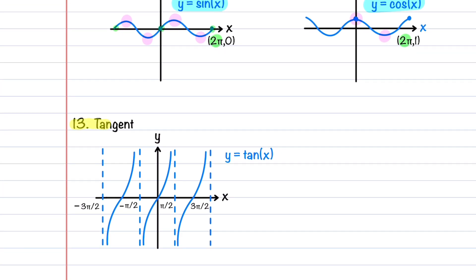The last function is the tangent function, defined as y = tan(x). The function has vertical asymptotes at π/2 and every π units to the right and to the left. It is similar in shape to the cubic function, is an odd function, and is symmetric about the origin.